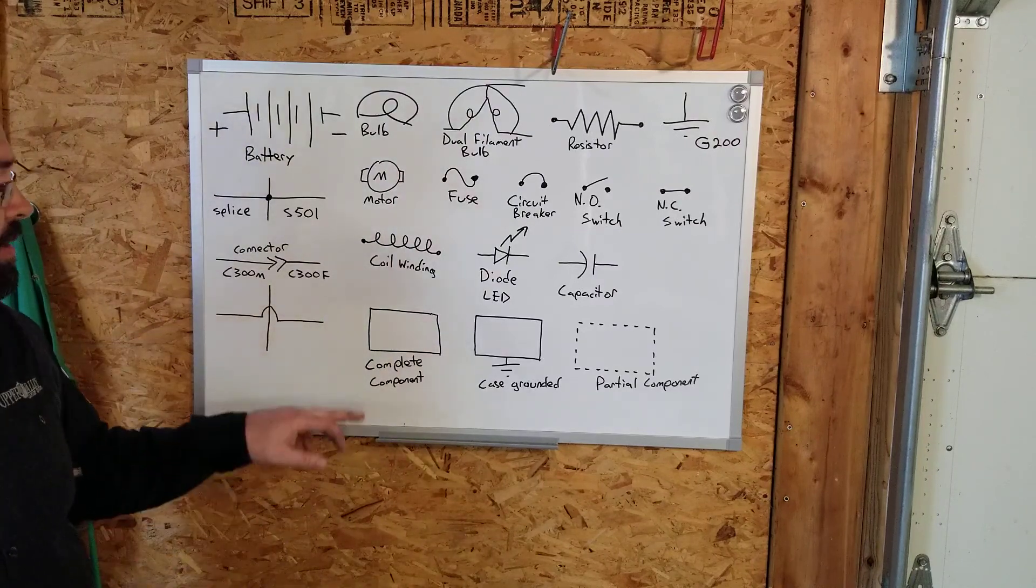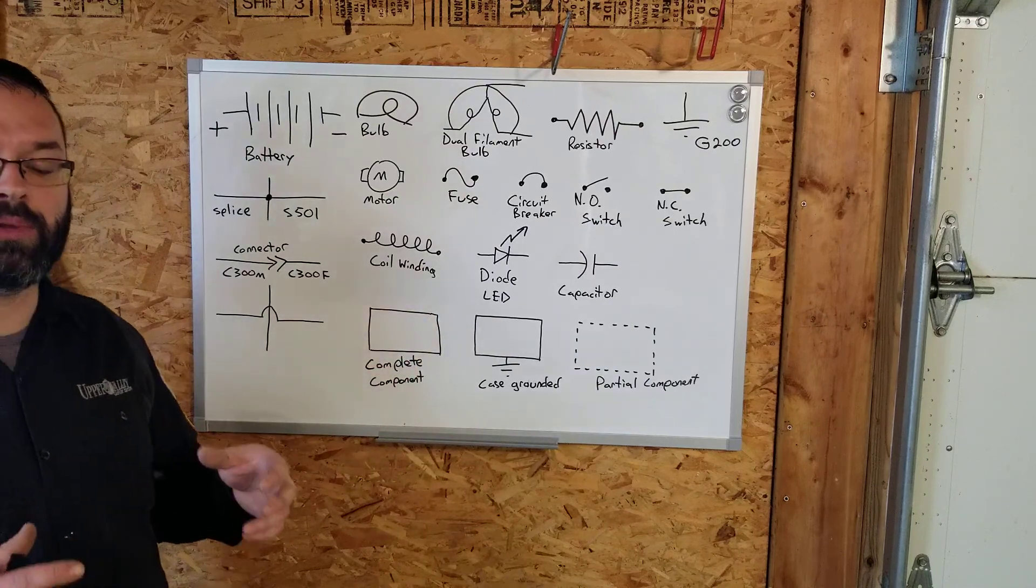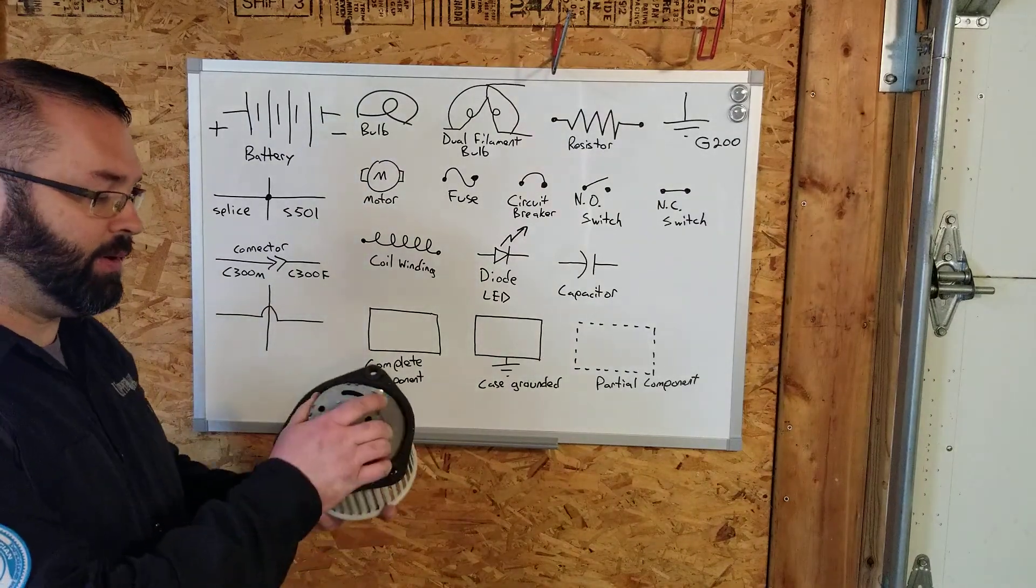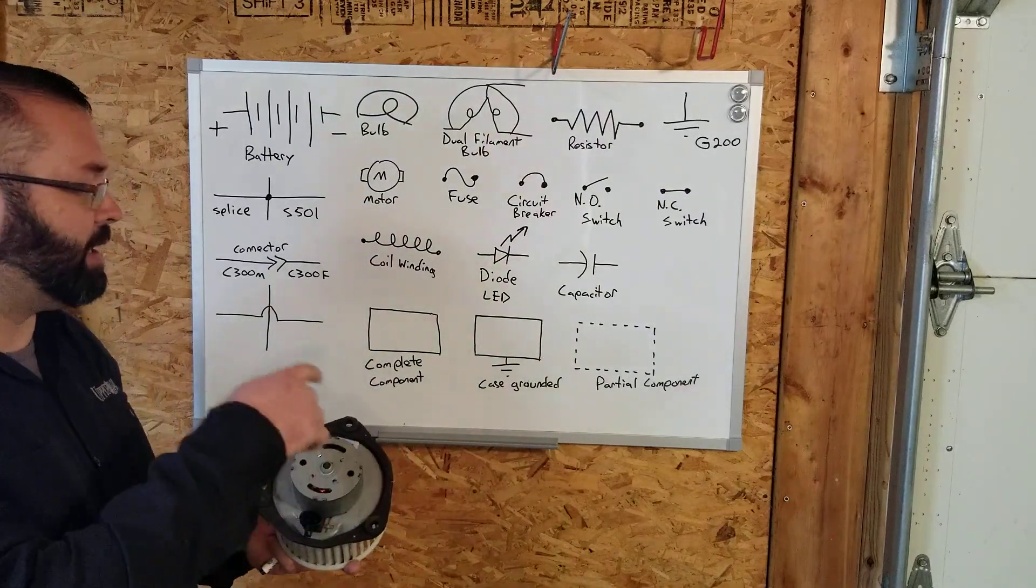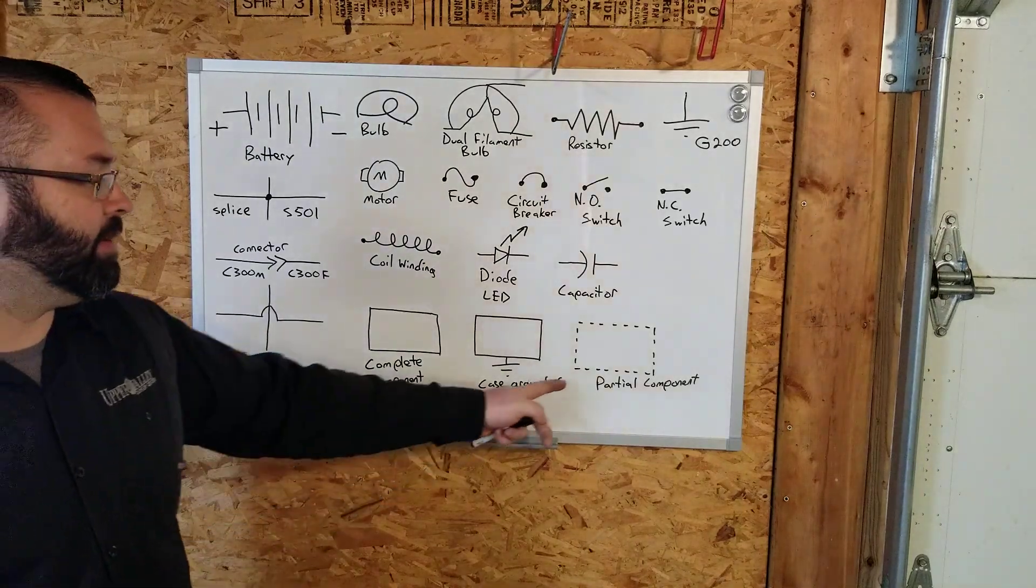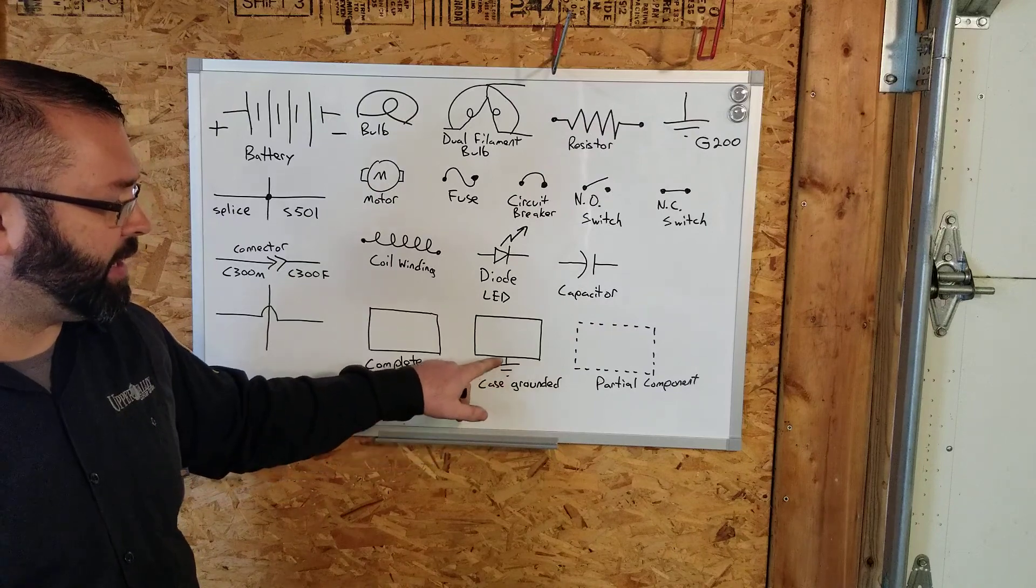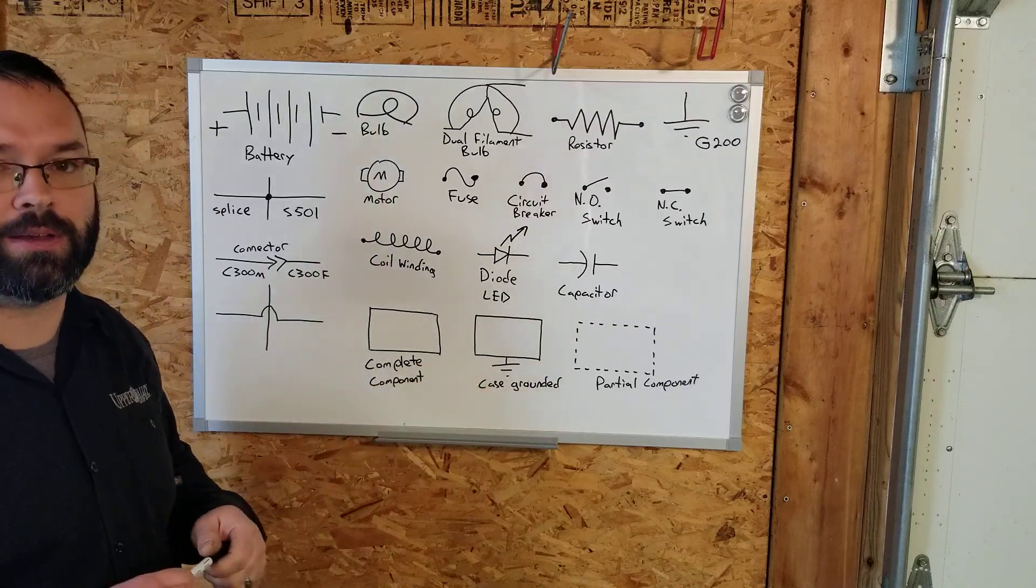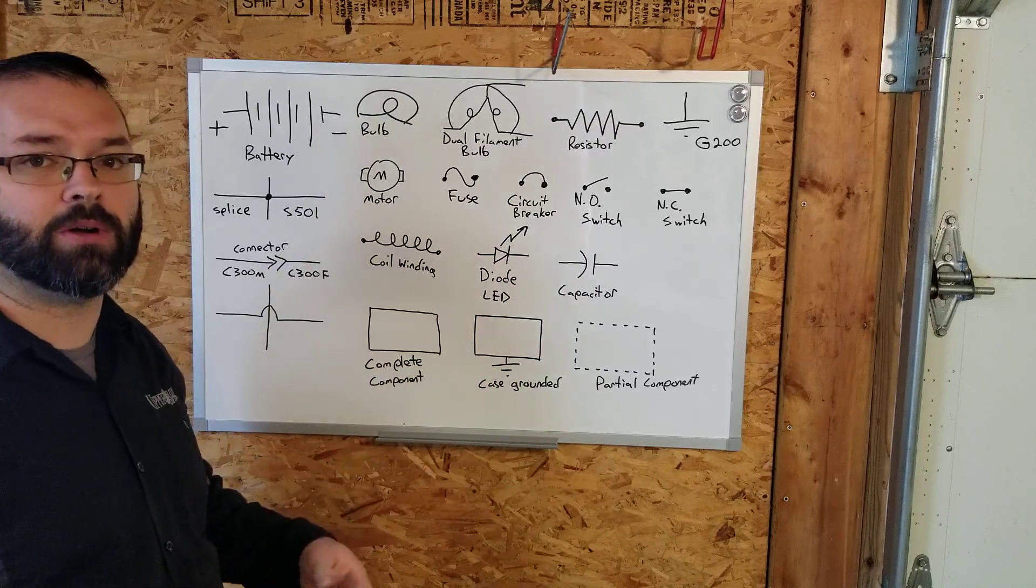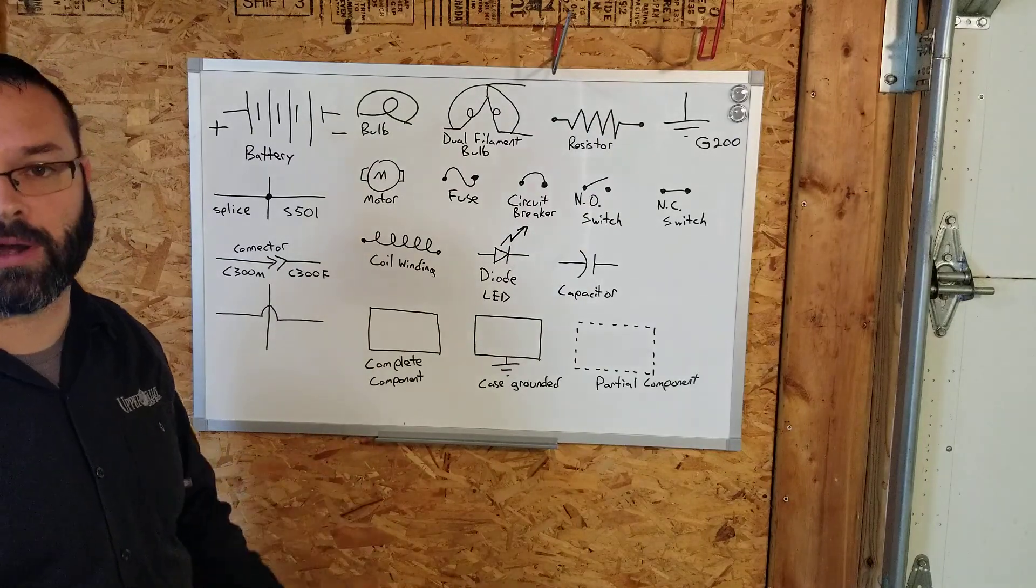If you're looking at a diagram and there's a component with a complete box around it, that is the complete component, not just part of it. Like this blower motor, it would show up as a complete box unit. If it only showed part of that component, it would have dashes around it. If that component had a ground symbol attached, it means it is case grounded. Starter motors are case grounded because they're grounded through the case of the starter, which is bolted to the engine, which is a ground. They don't have to run any separate ground wire.